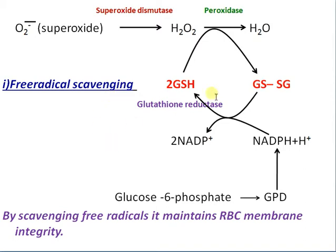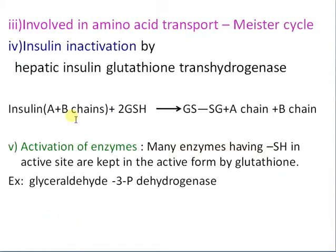Glutathione acts as a free radical scavenger. One of its mechanisms involves glycine acting as a free radical scavenger, maintaining the integrity of RBC membranes. Glutathione is also involved in amino acid transport, insulin inactivation, and hepatic glutathione transhydrogenase activity — linking the alpha and beta chains via disulfide bonds.